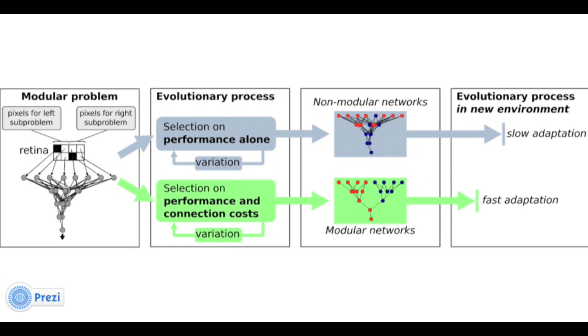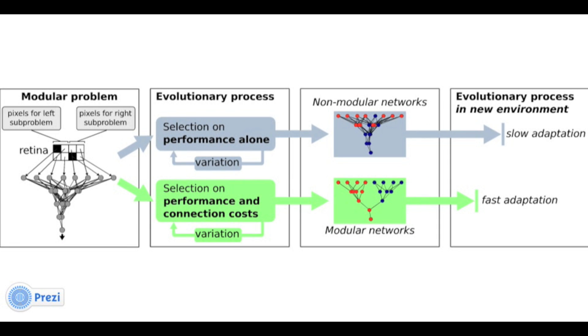If we take both types of networks and place them in a new environment, the modular networks adapt much faster, because evolution can quickly assemble the modules.